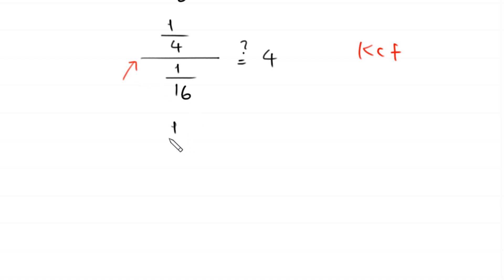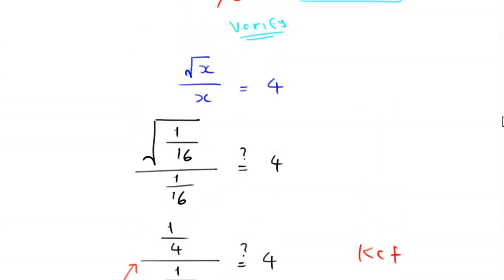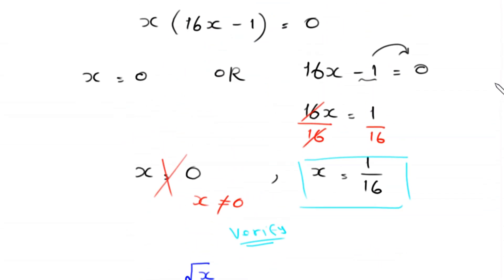Using the keep-change-flip rule, we change this division into multiplication: 1 over 4 times 16 over 1 equals 4. The 4 cancels once, giving 4 equals 4. The left-hand side equals the right-hand side, so x equals 1 over 16 is a valid solution.